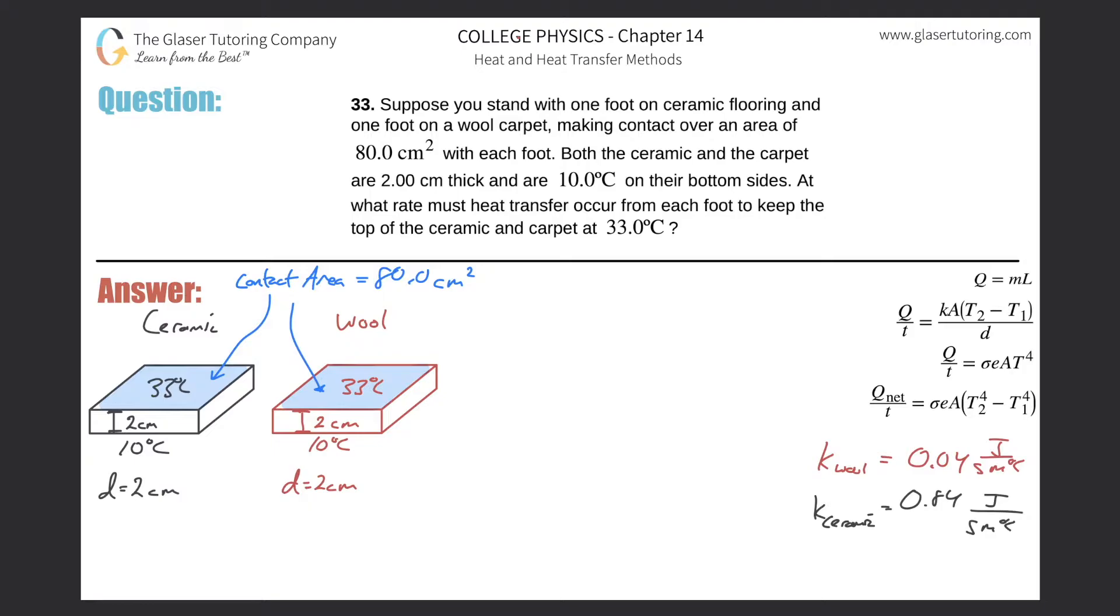Number 33. Suppose you stand with one foot on ceramic flooring and one foot on a wool carpet, making contact over an area of 80 squared centimeters with each foot. Both the ceramic and the carpet are two centimeters thick and are 10 degrees Celsius on their bottom sides. At what rate must heat transfer occur from each foot to keep the top of the ceramic and carpet at 33 degrees Celsius.